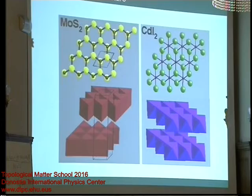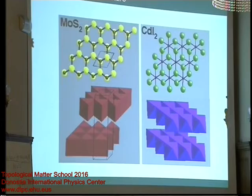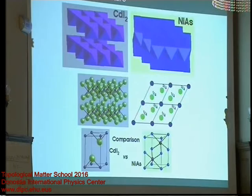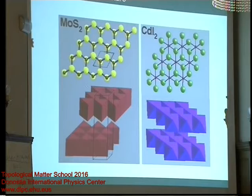In nickel arsenide, it is a little different from sodium chloride. The arsenic is surrounded by nickel in a trigonal prismatic arrangement, and the nickel is surrounded by arsenic in an octahedral way. So you have two different schemes: you can have trigonal prismatic layers of the cation, like in MoS₂, or octahedral surrounding, like in cadmium diiodide.